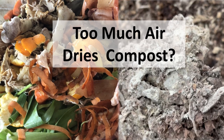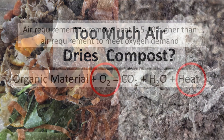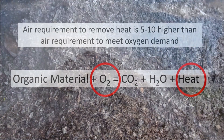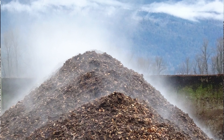Aeration may dry our compost. It dries faster when we compost high energy waste like food scraps. The air requirement for heat removal is 5 to 10 times higher than the air requirement to meet the oxygen requirements of the microbes. When air moves through the pile, moisture moves with it.